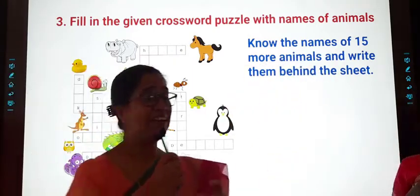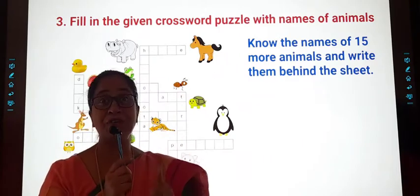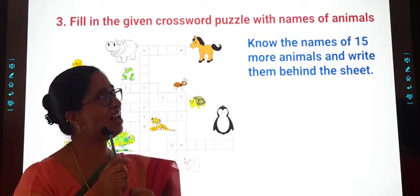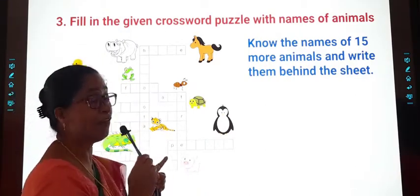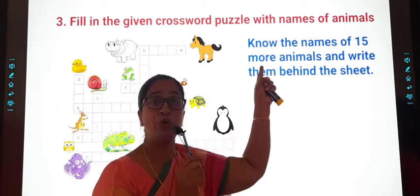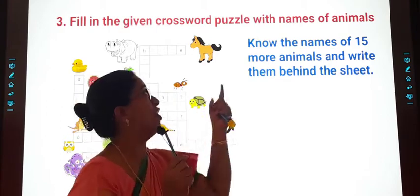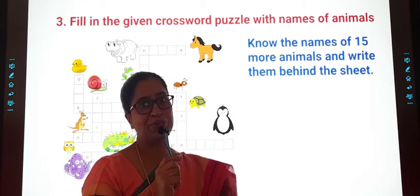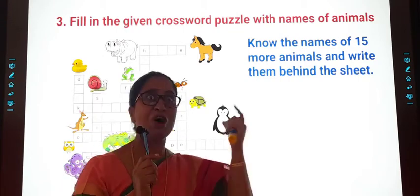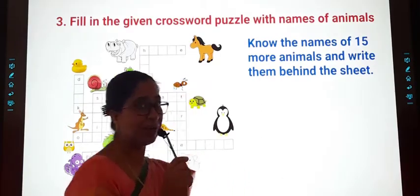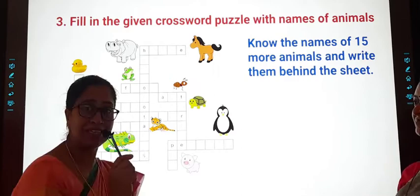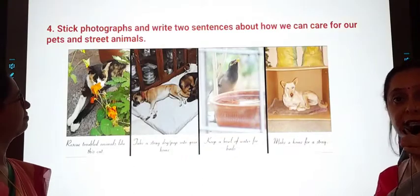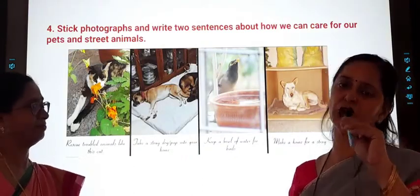So students, here you are going to write the names of animals. In grammar we have learned nouns. Names of animals. So here you will fill the names of animals. And you will know the names of more animals, other than this around 15 more names you can write behind the sheet. Okay? So it is English grammar plus lot of general knowledge. Okay? Let's see what is the next subject that we are going to do in the project. Yes, students, you understand how to do crossword puzzle? You do it daily? It's good.